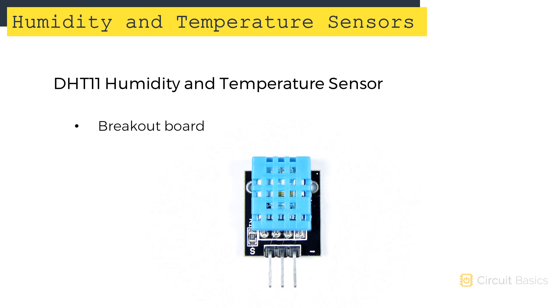This is a breakout board version of the DHT11. It has three pins: one for the signal, one for VCC, and one for ground.